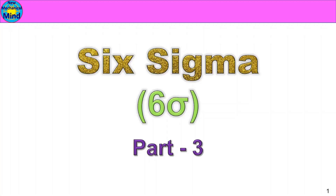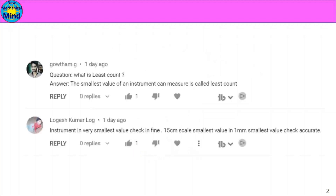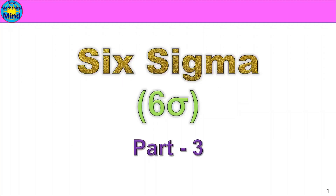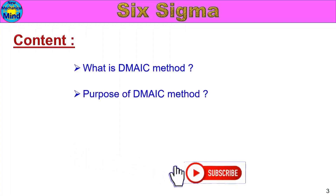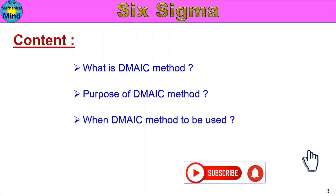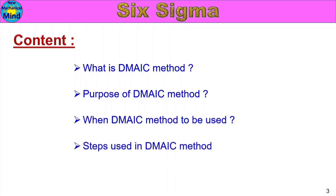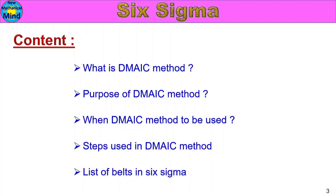We will know about the least count. In this video, we will see DMAIC — we will know about this method. Maximum, all companies are following this method. If you want to solve any problem, you will know about the existing method. That's why this video will be very useful. Let's go to training. The content includes: what is DMAIC method, the purpose of DMAIC method, when DMAIC method is to be used, steps used in DMAIC method, and the list of belts in Six Sigma.